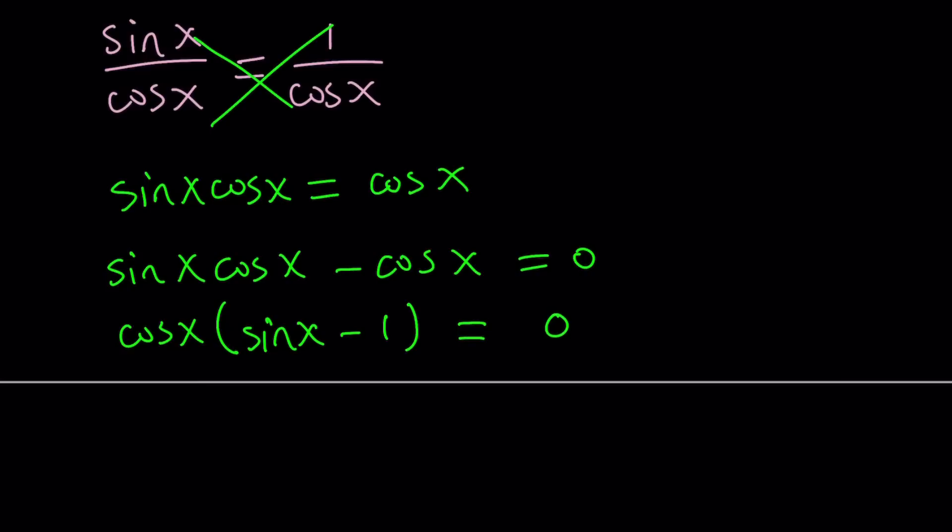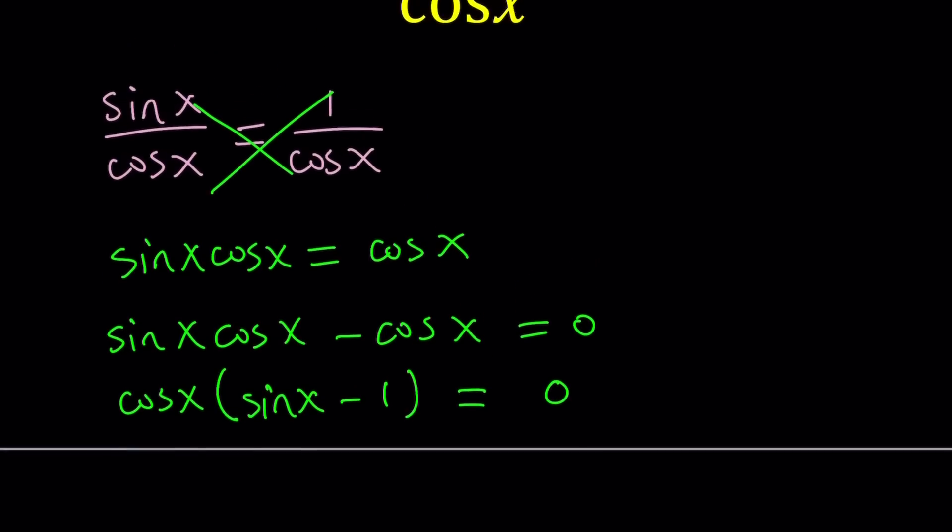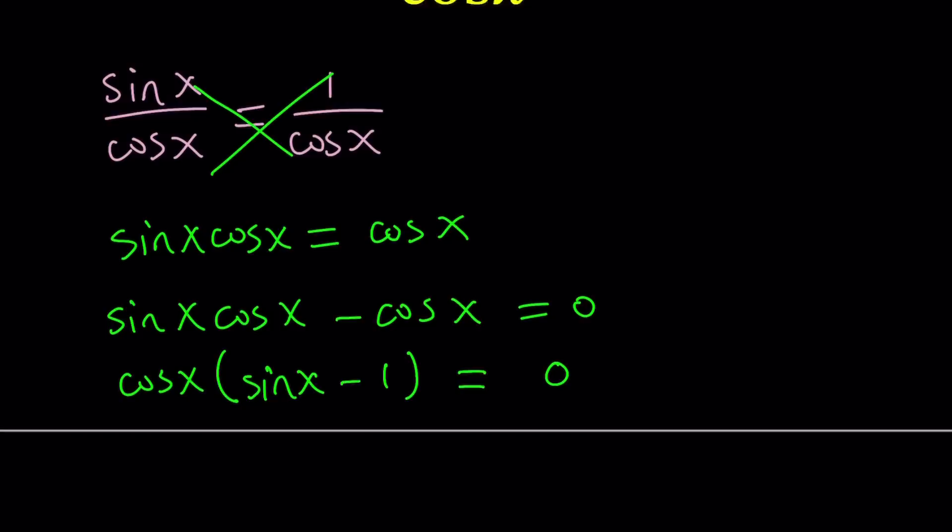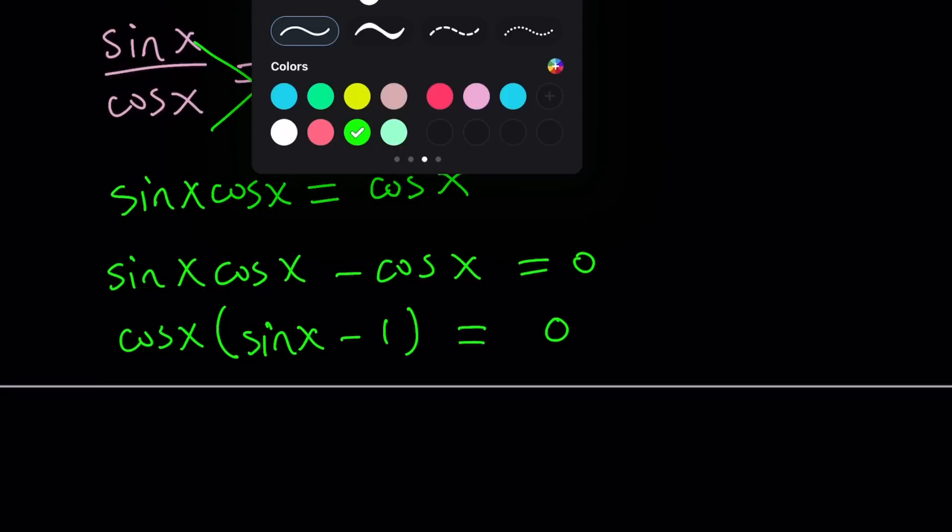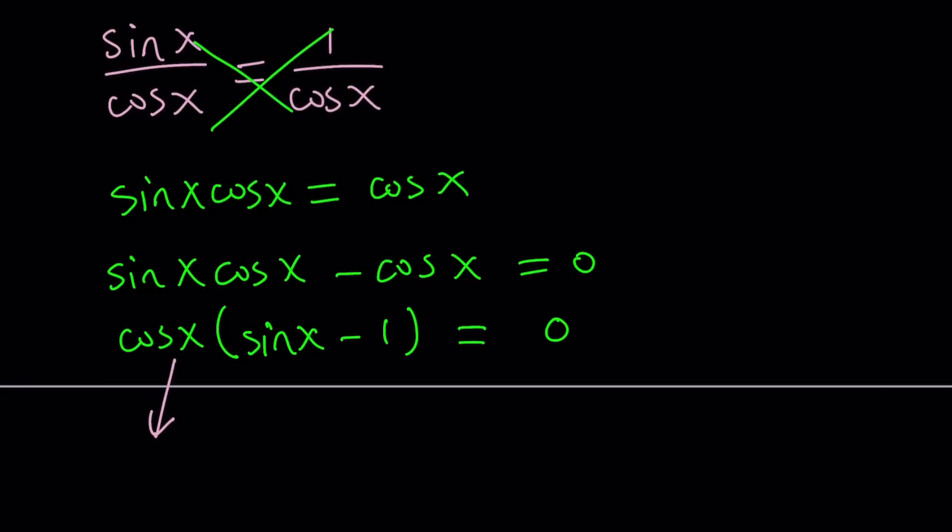And that gives us cosine x times sine x minus 1 equals 0. Now, it's important to write it that way. That way, we can consider all solutions, if there are any. Now, we have a product, and this tells us, basically, if the product is 0, then each factor can be equal to 0. So let's go ahead and set each factor equal to 0.